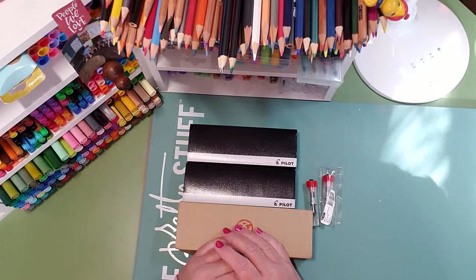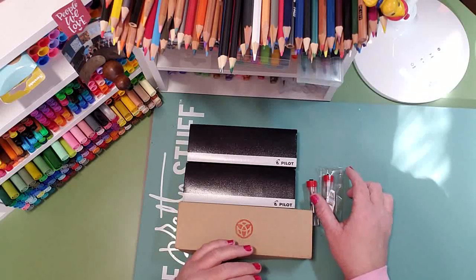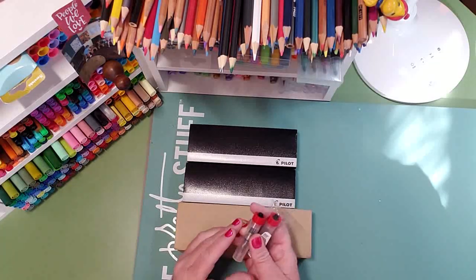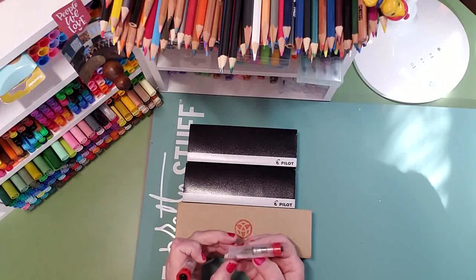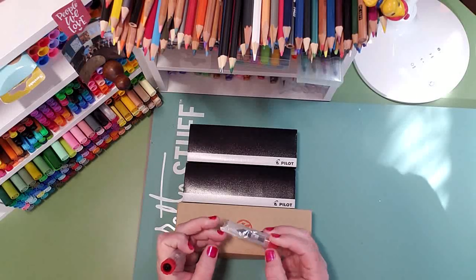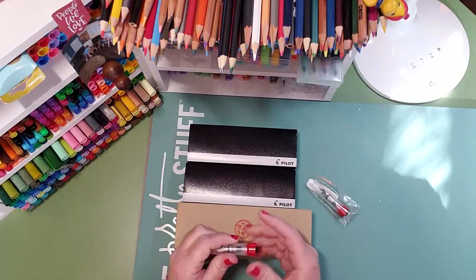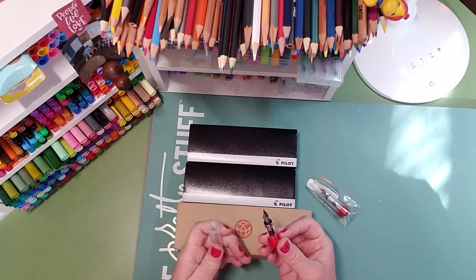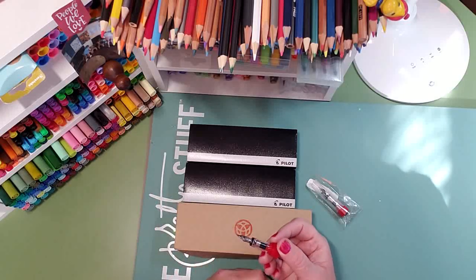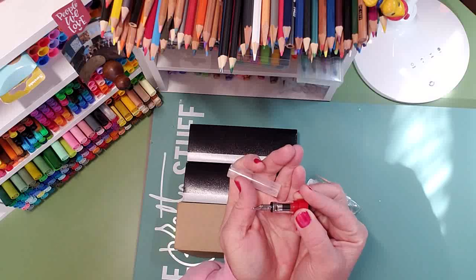So without further ado, I have a haul from JetPens.com and let's get started, shall we? This is a fountain pen haul. I'm gonna start off with these. I got the Twsbi stub 1.1 nib replacement and then I got a broad one. They come like this so you can just pull that out and then replace your nib basically.